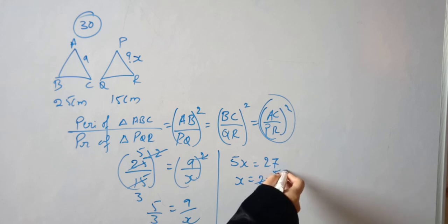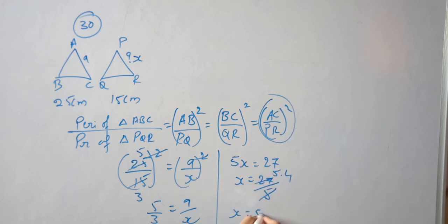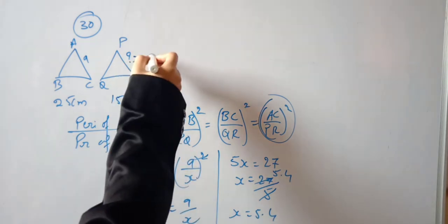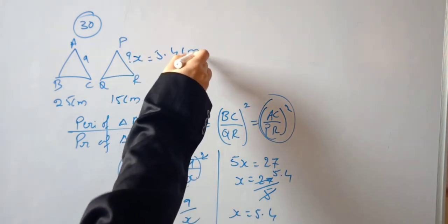So X is equal to 5.4 cm. The length we found out is 5.4 cm.